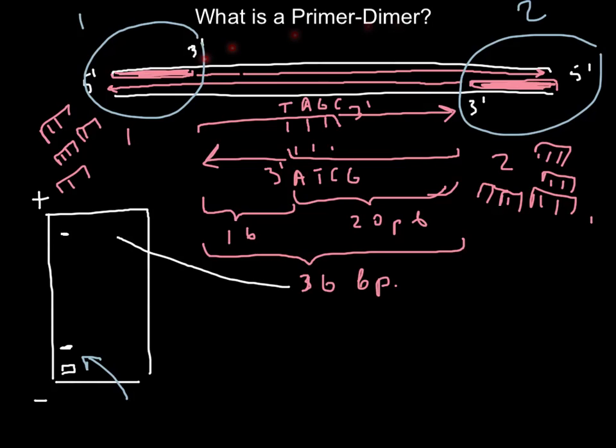And this is the product that we got from the primer dimer formation, and we basically wouldn't be able to see this product at all. So we just would be able to see only our primer dimer.